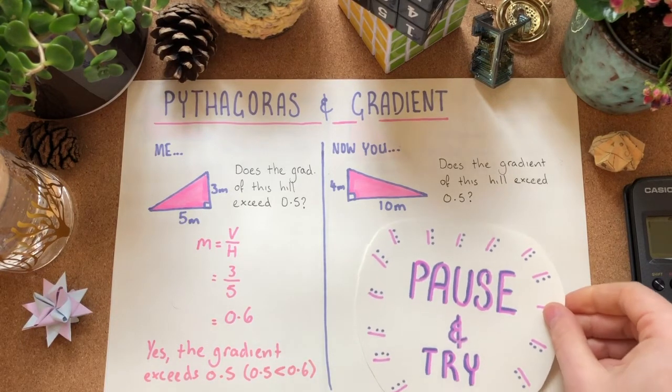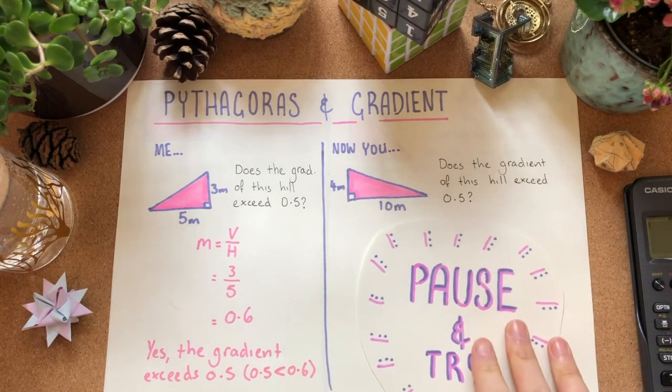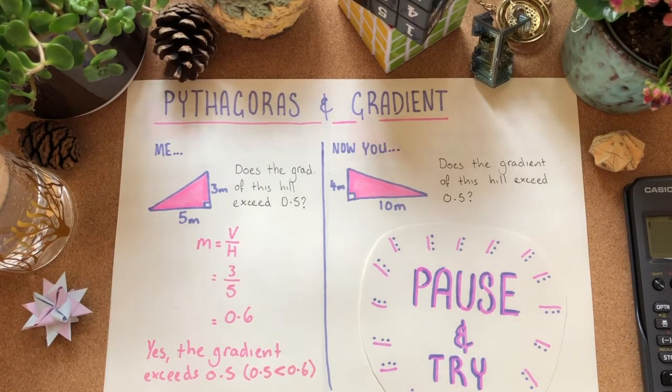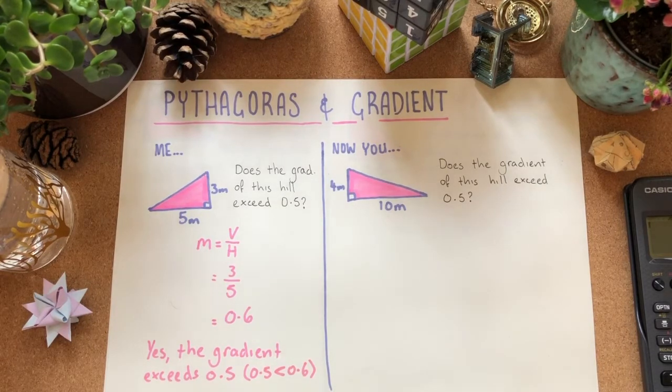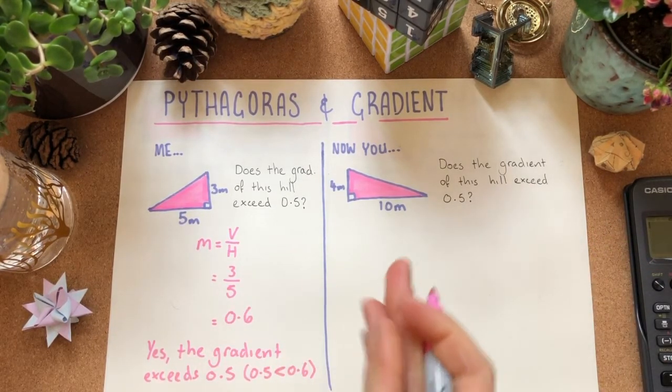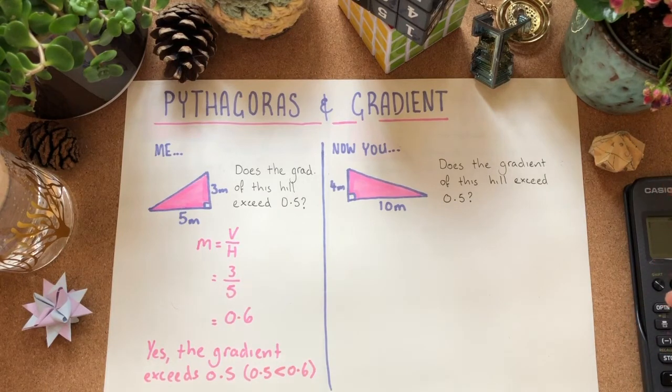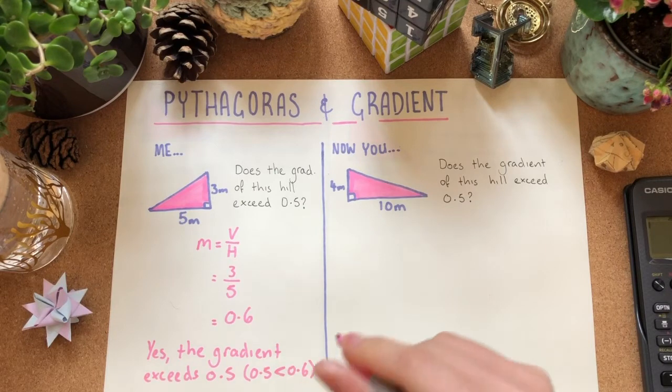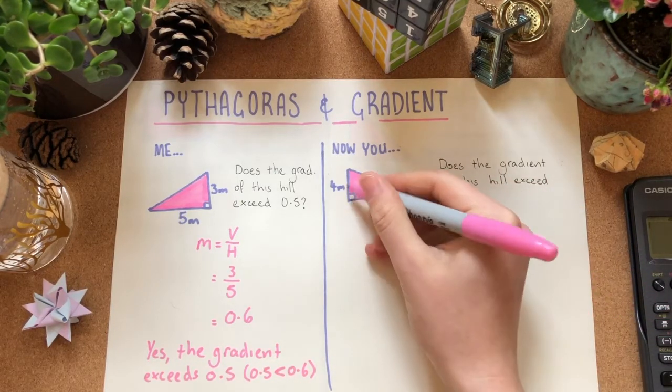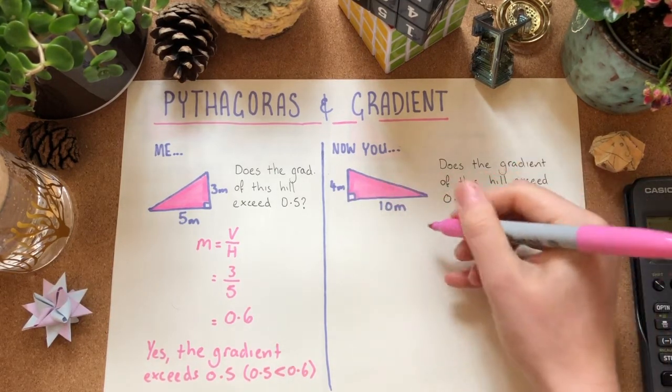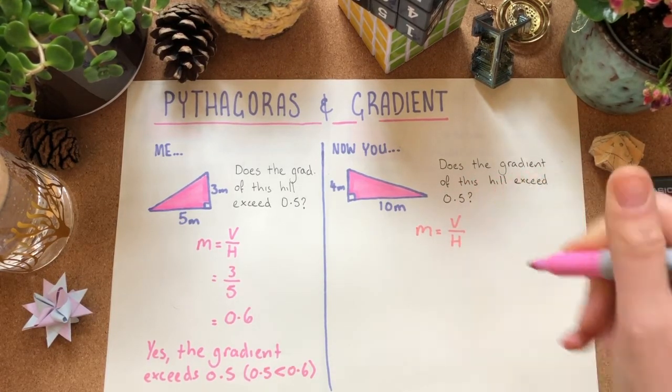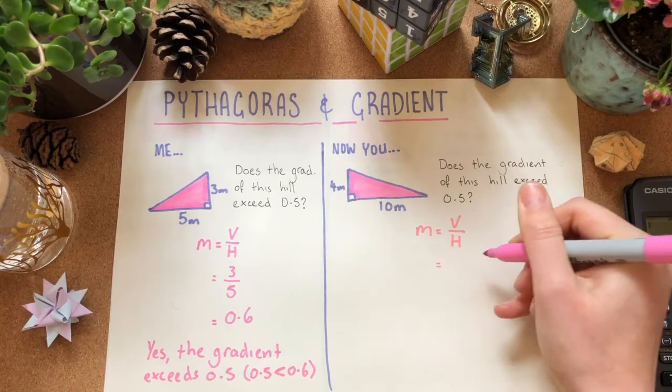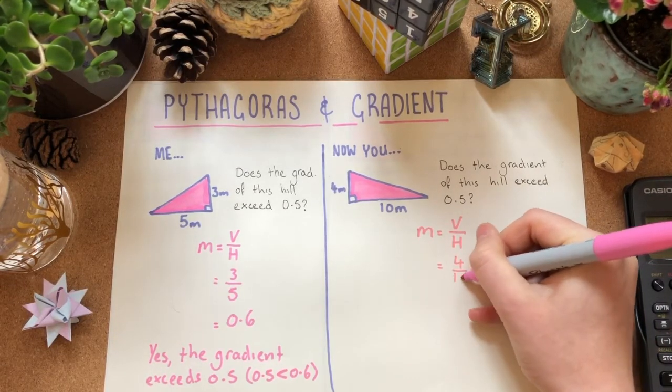Okay, similar question. Pause and try it. Okay, I hope you actually gave this a go because that's the best way to get use out of these revision materials. So, this one here, does the gradient of this hill exceed 0.5? We've got the vertical height, we've got the horizontal length so we can jump into m is equal to v over h which is going to be 4 for the vertical height over 10.